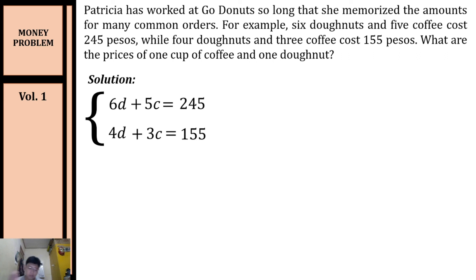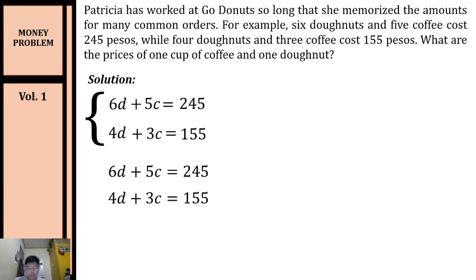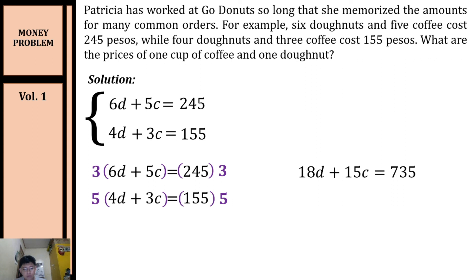Now that we have our system, we can solve for d and c using elimination method. I decided to eliminate variable c. To make the coefficients of c the same, multiply the first equation by 3 and the second equation by 5. The first equation becomes: 18d + 15c = 735. The second equation becomes: 20d + 15c = 775.